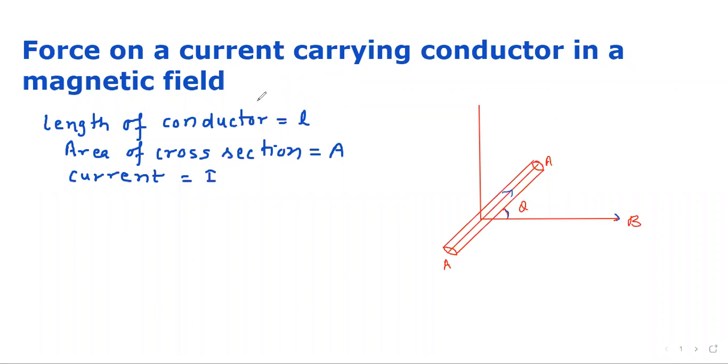Force on a current carrying conductor in a magnetic field. Here, this is a conductor whose length is L, area of cross section is A, and it carries current I. This conductor makes an angle theta with the direction of the magnetic field.